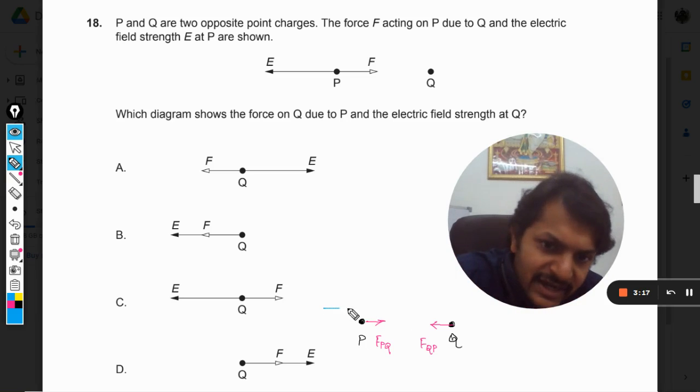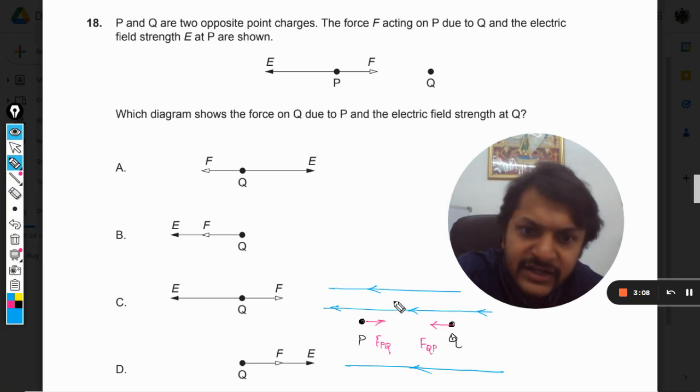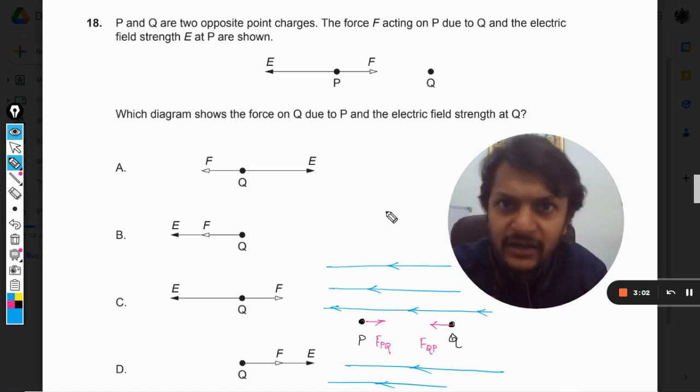So I can say that there is an electric field here and the direction of electric field is like this. And it is a uniform electric field that I am trying to show. So uniform electric field is shown by using parallel lines which are equidistant.